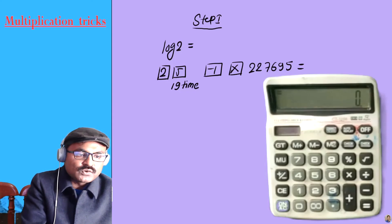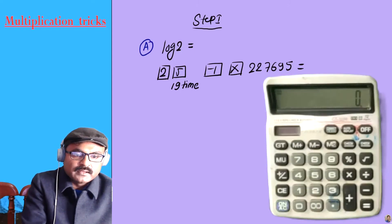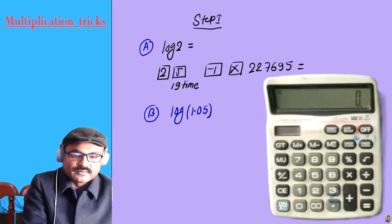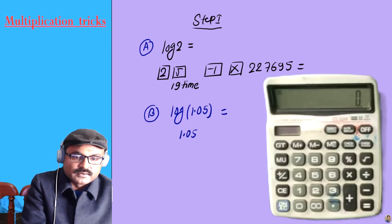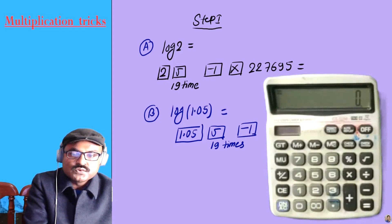If you add log 2, then you press log 5 and you press log 1, and you press log 1.05. This was the square root 19 times, minus 1, then press equal, going into 2.27695.